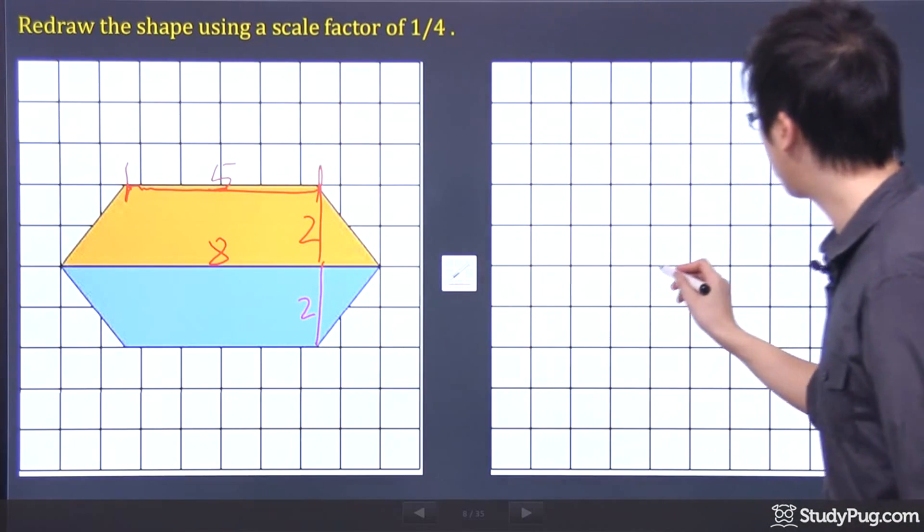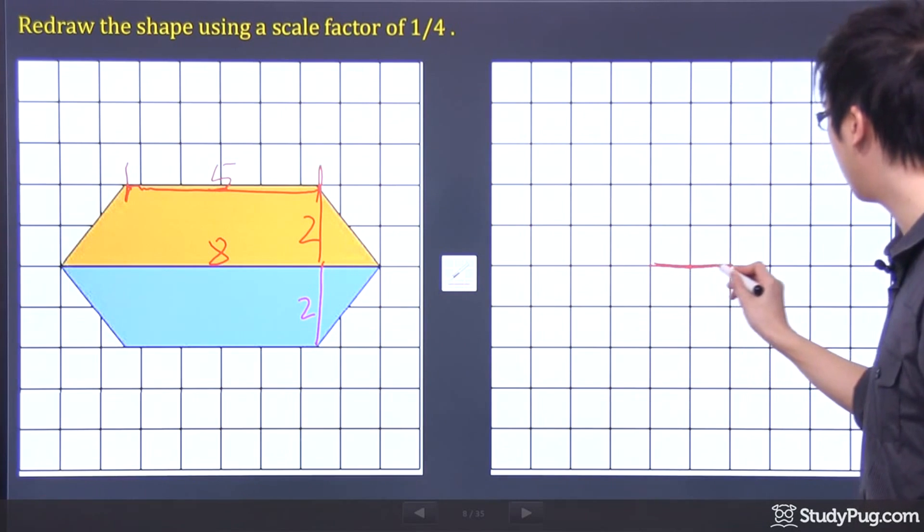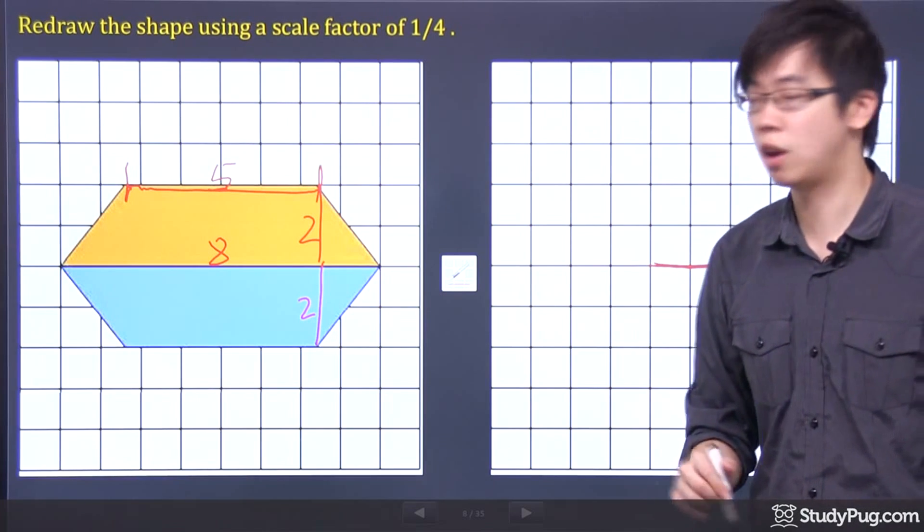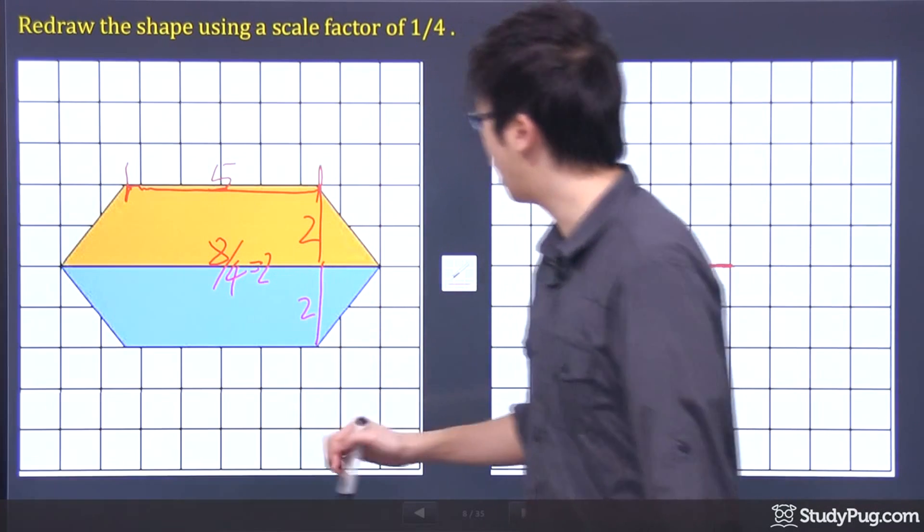Coming over to the center line right here, I'm going to draw a center line and that's going to be my new shape. If I divide this 8 by 4, I've got 2 right now.